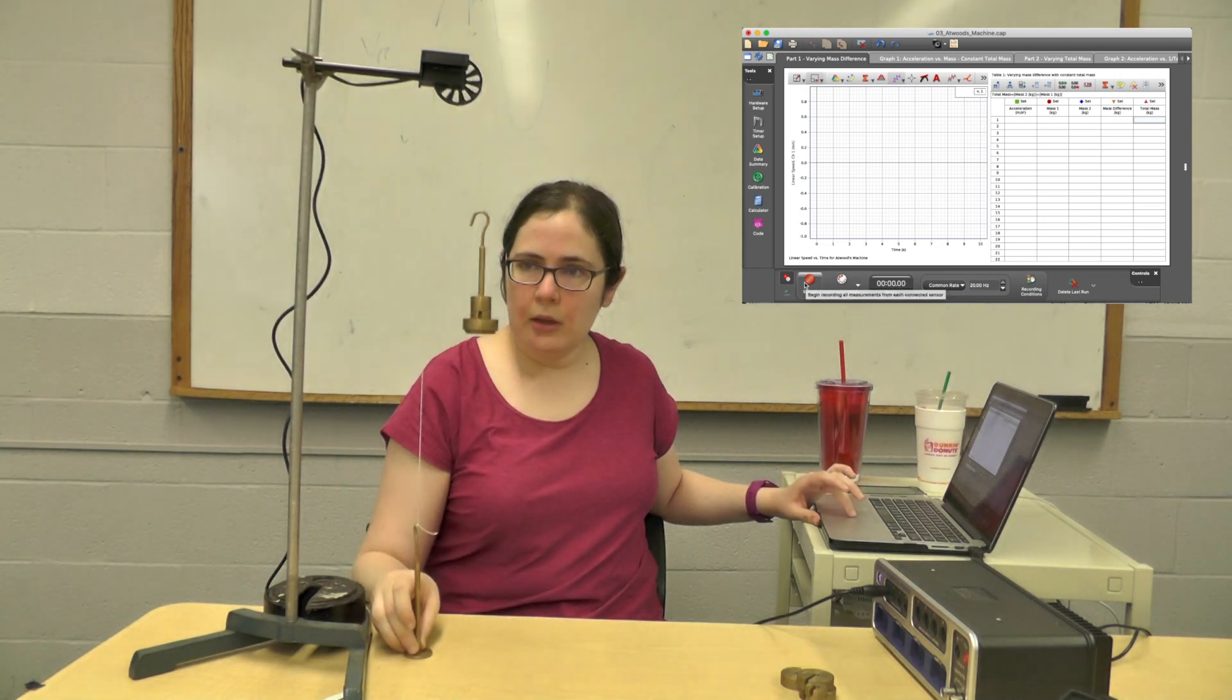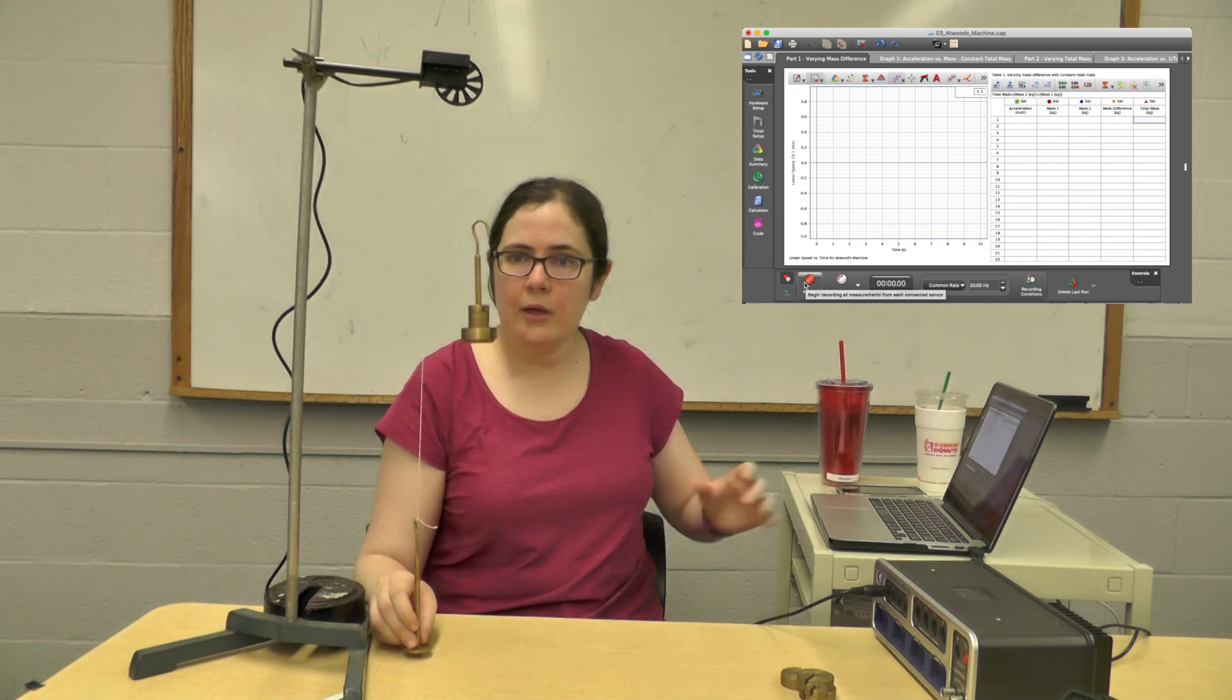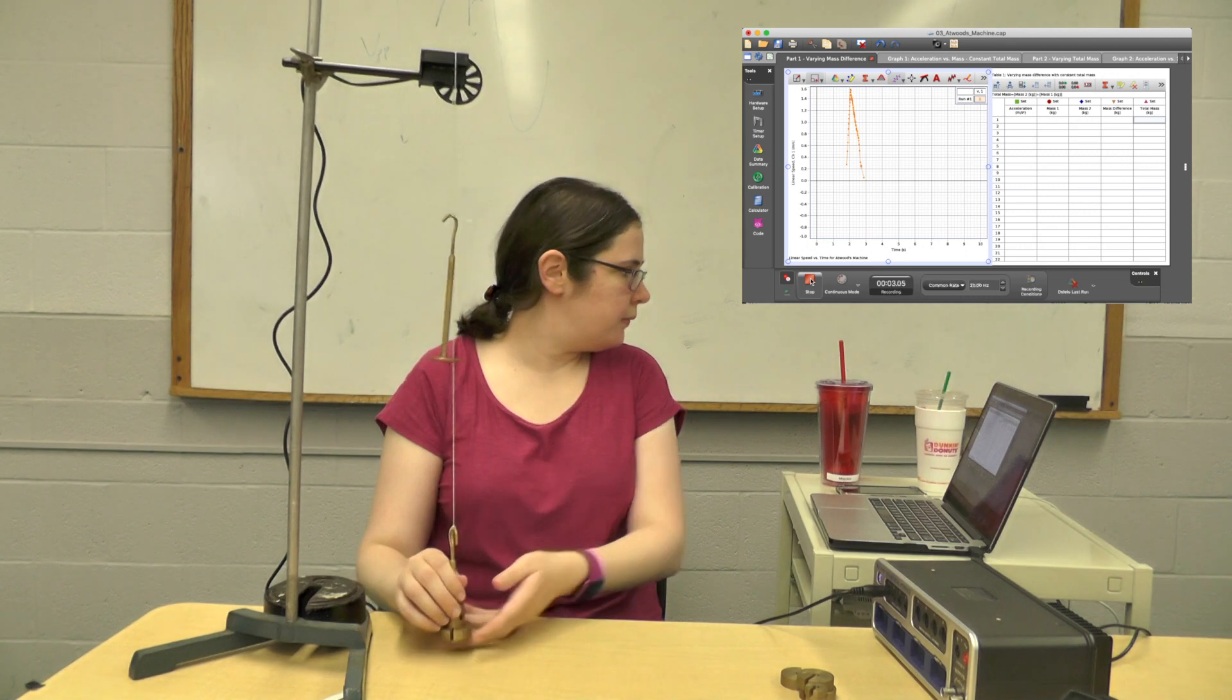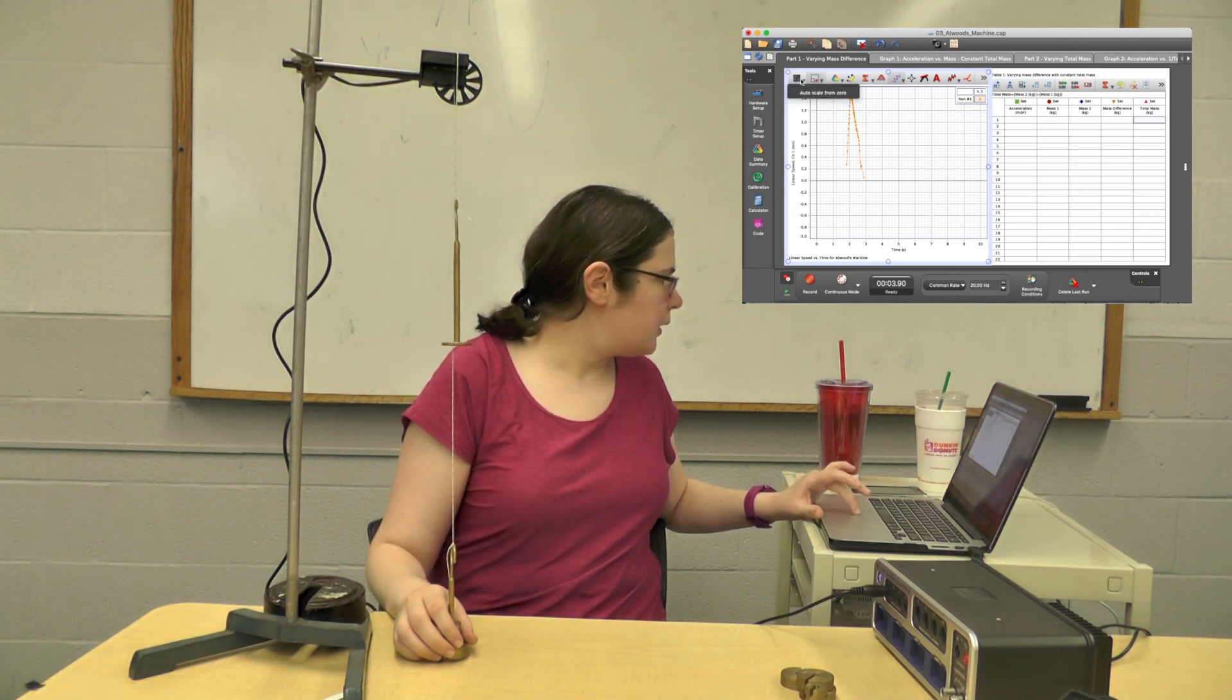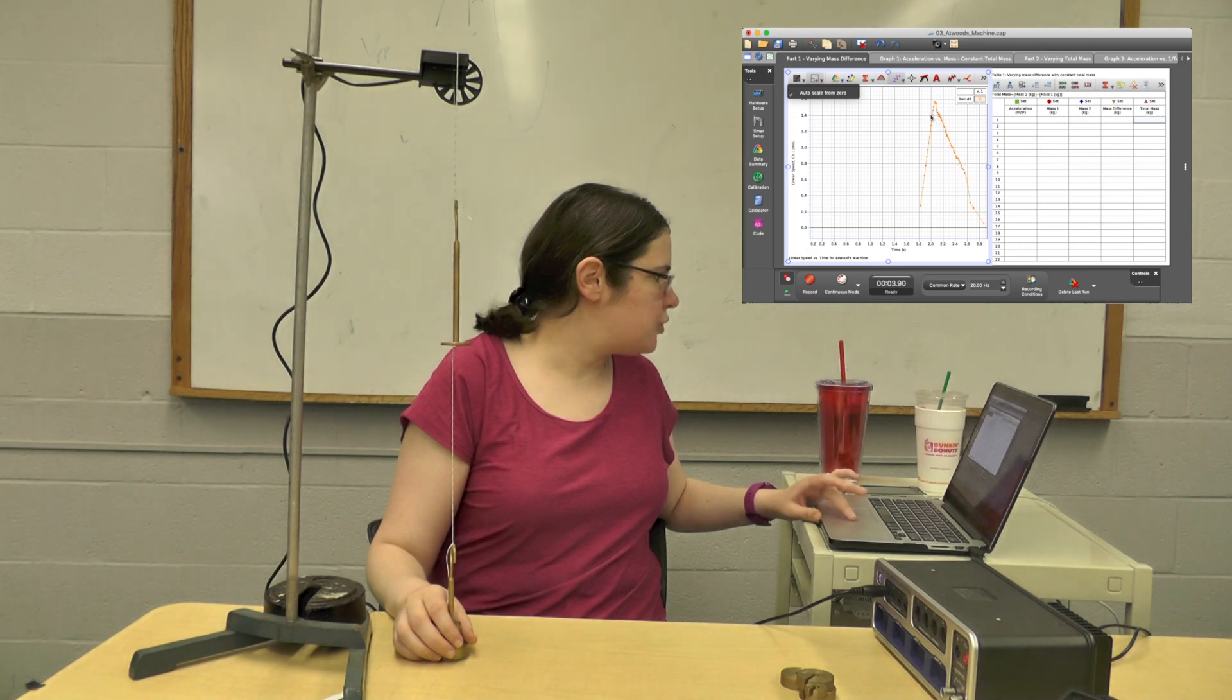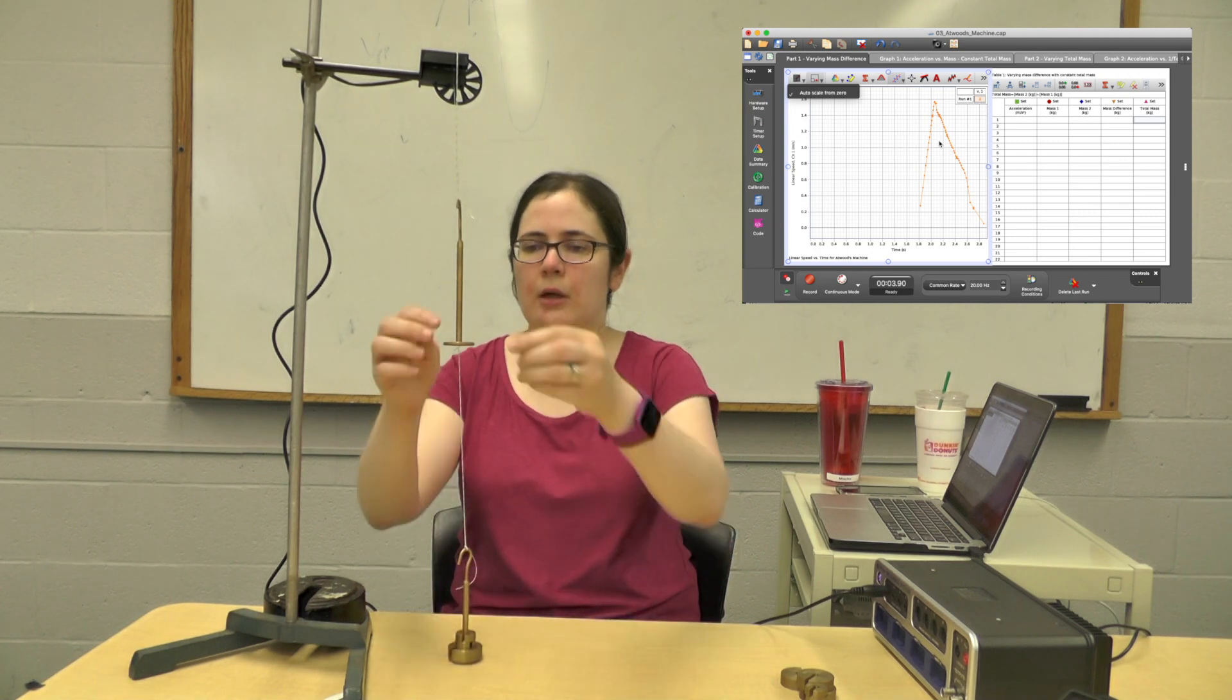So this is going to be run one. We're going to have the light one down here, the heavy one is going to fall, and we're going to see how the string moves. Press record and go. You can kind of see where it hit my hand there, but at least there's a fairly straight portion and that's where you're going to get the acceleration from.